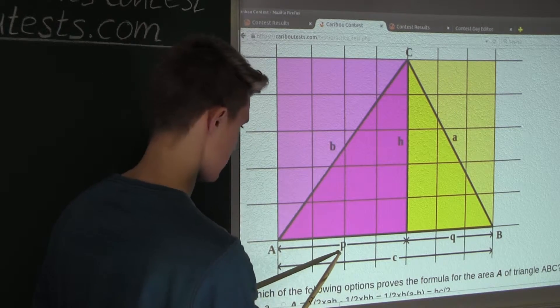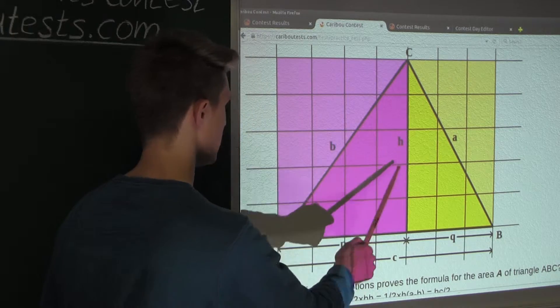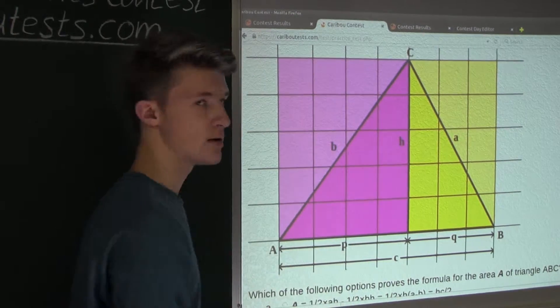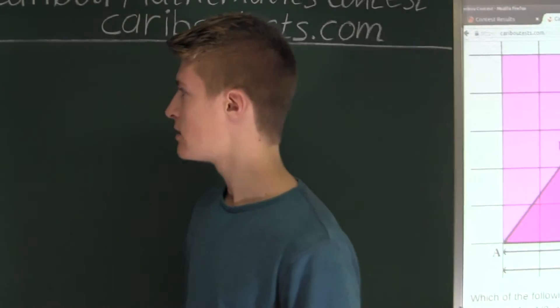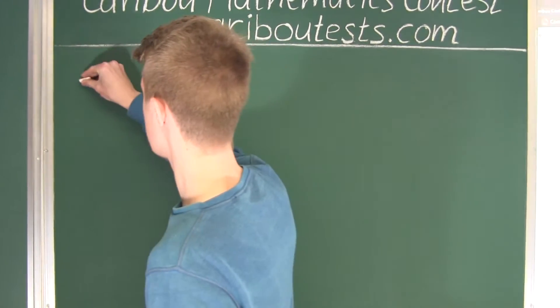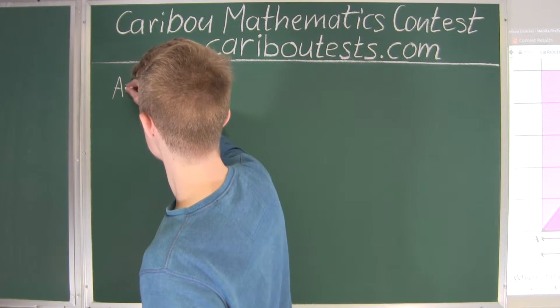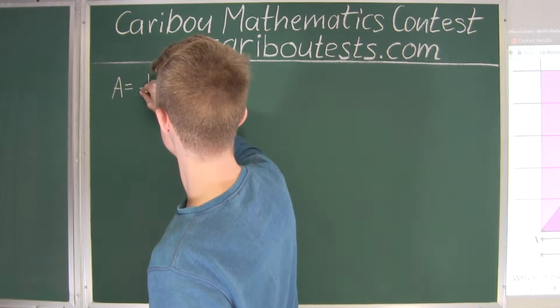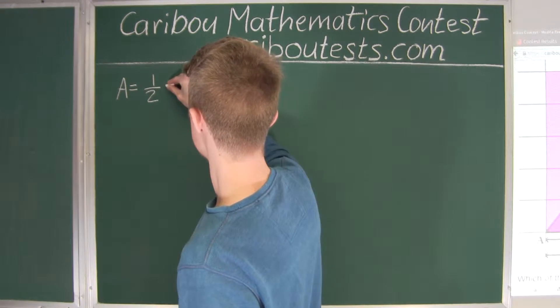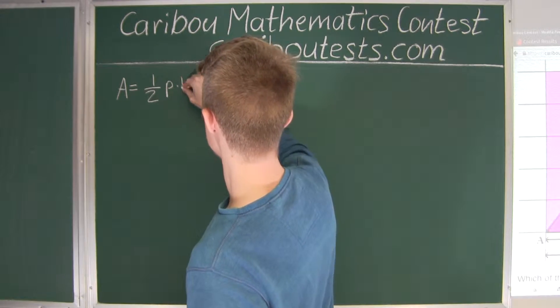And this rectangle has the side lengths P and H, so 1 over half of P times H. So we have the area is equal to 1 over 2 times P times H.